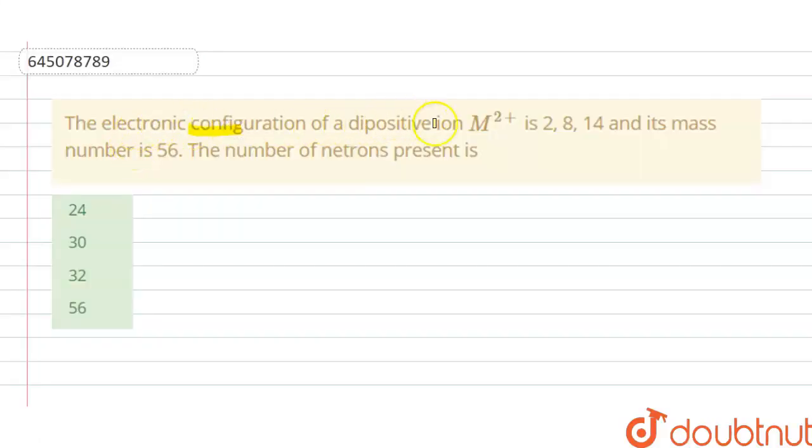The electronic configuration of a diapositive ion M²⁺ is 2, 8, 14 and its mass number is 56. The number of neutrons present is: options A, B, C, D are given here, so we have to choose the correct option.